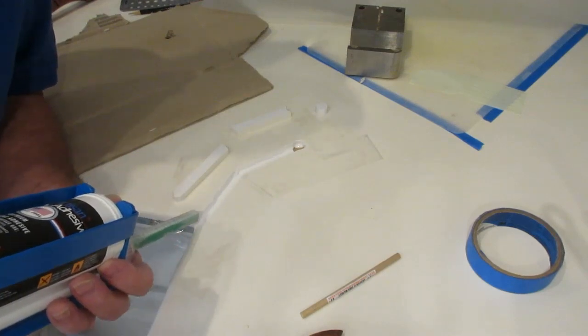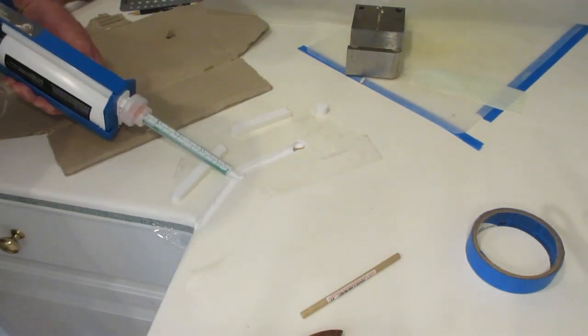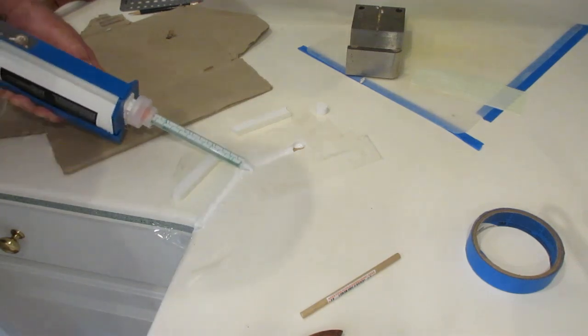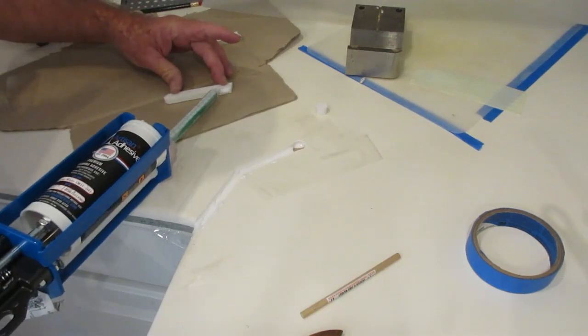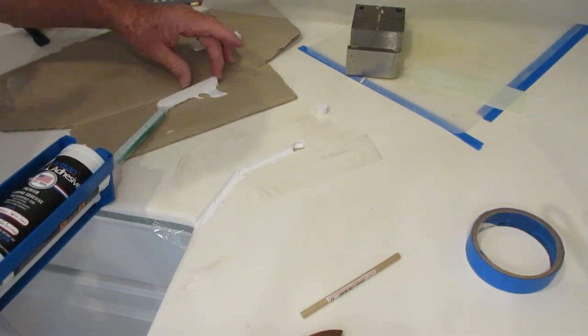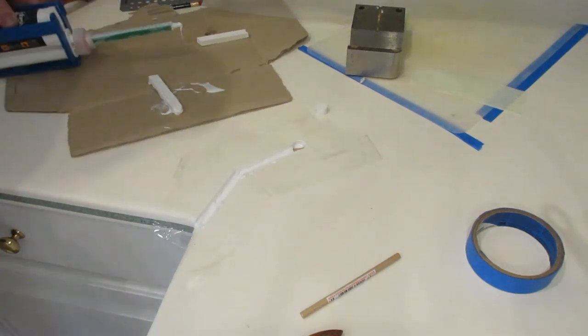This is two-part adhesive for solid surface repair. So Google around a little bit and find the color that's best suited to what you have, and watch other videos to make sure you have all the information you need before you start this.